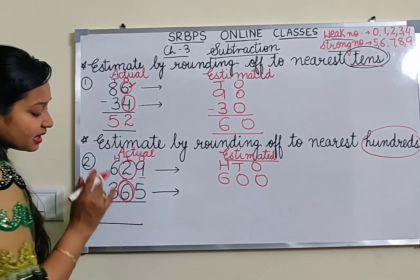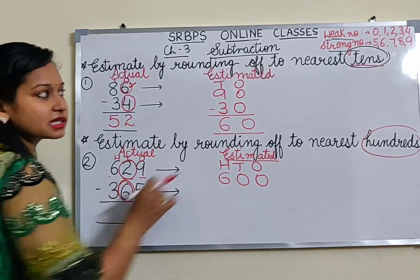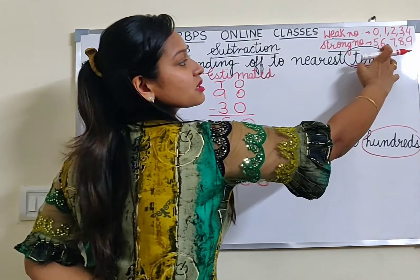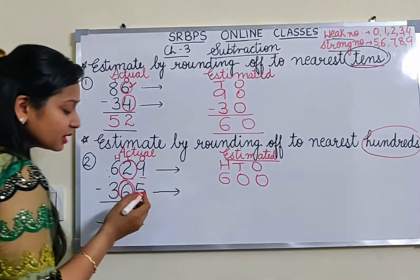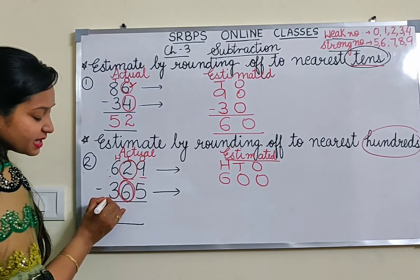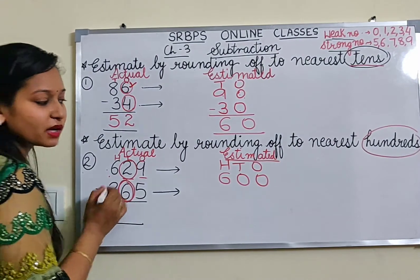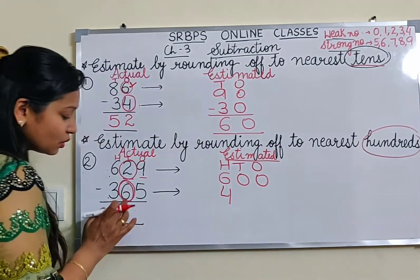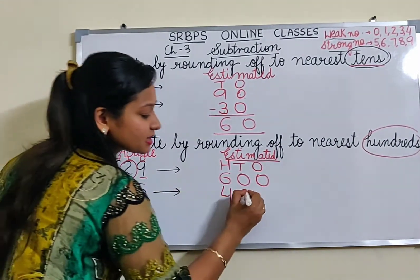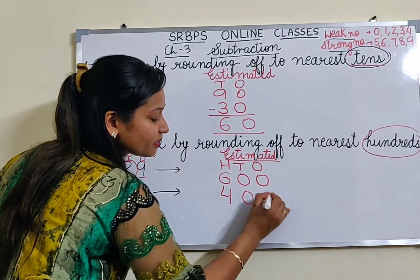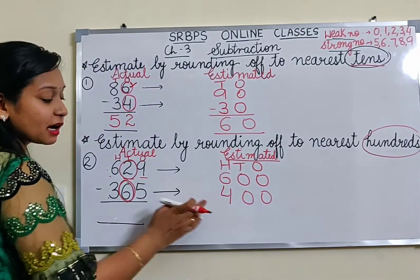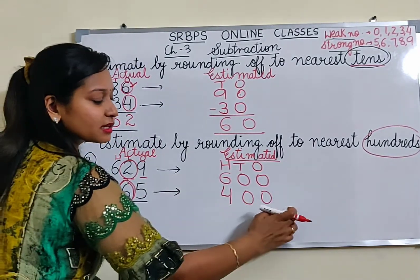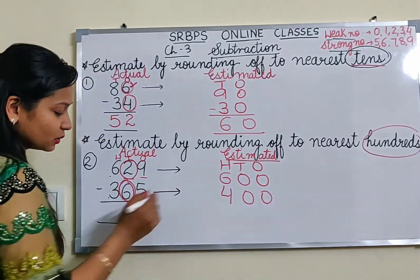For the second number, the digit inside the circle is 6, and 6 comes in the strong number list. A strong number adds one to the digit before it. So 3 will become 4 and the remaining digit 2 will become 0. So 362 rounds off to 400.